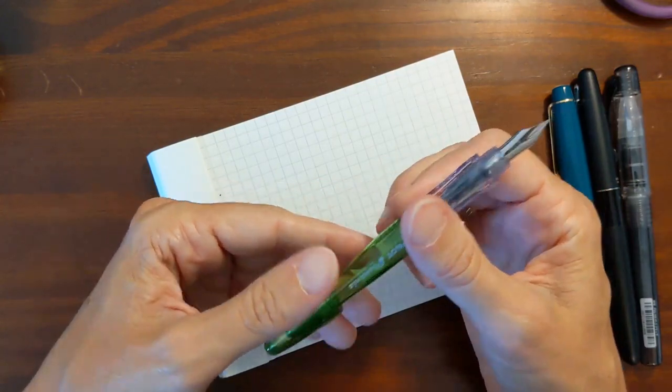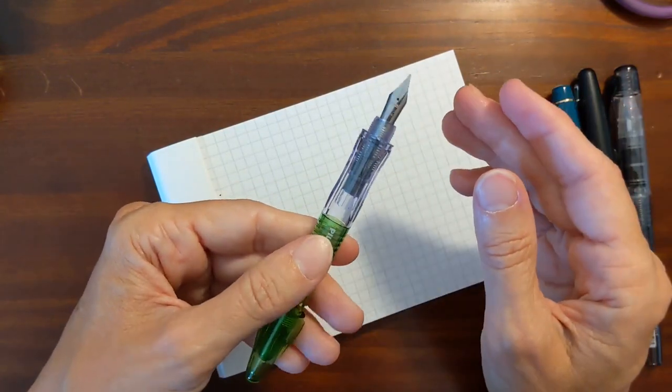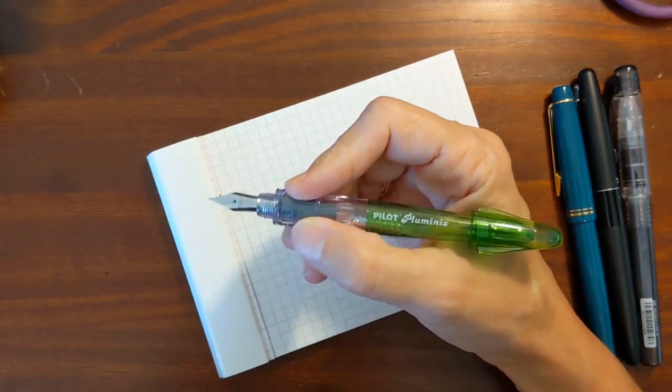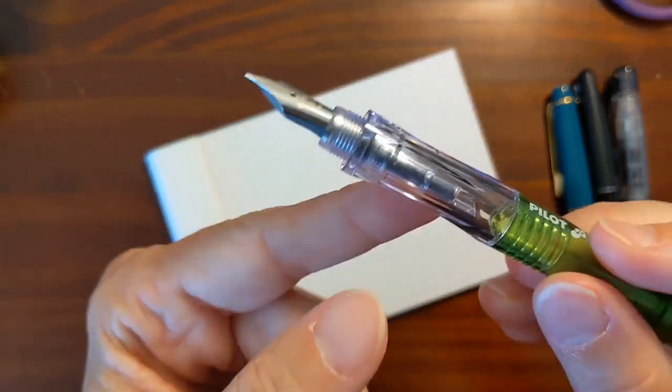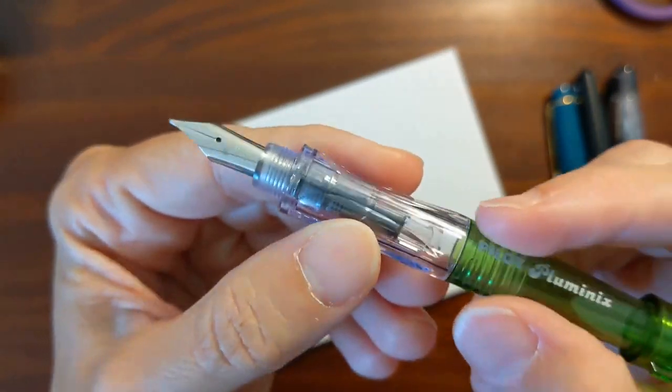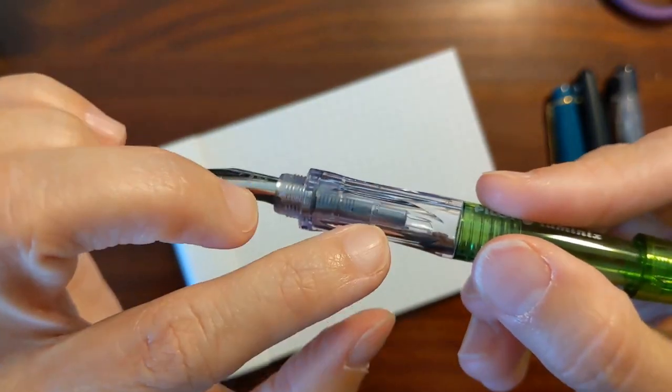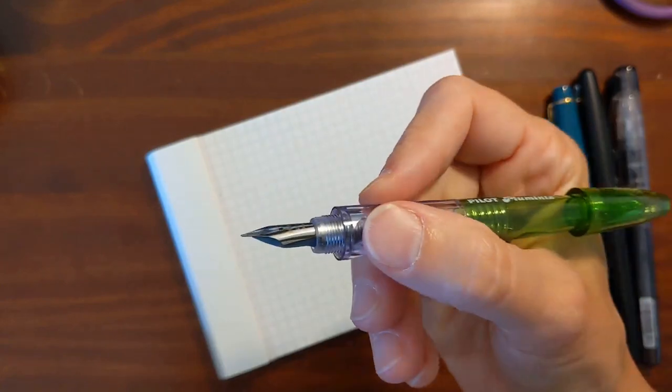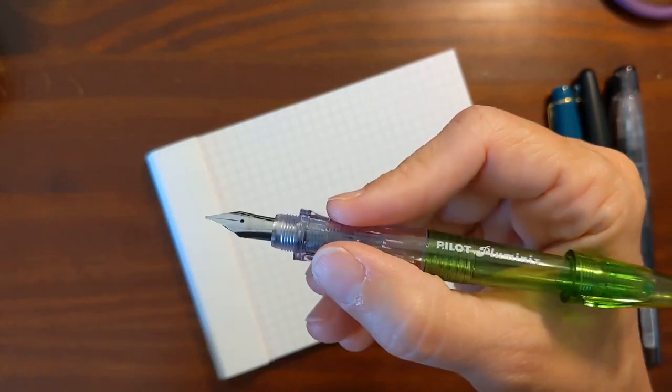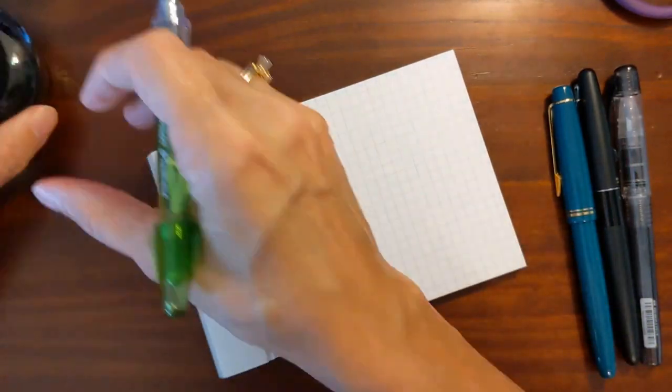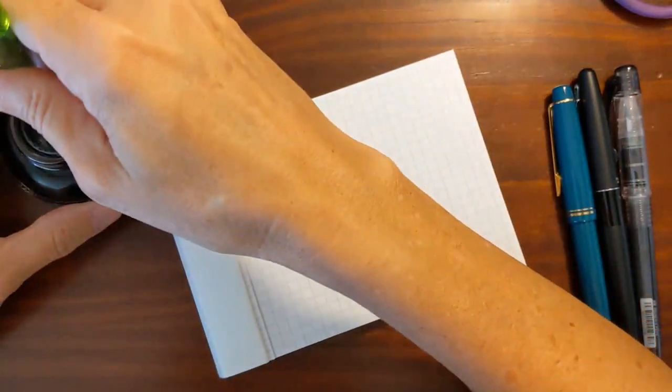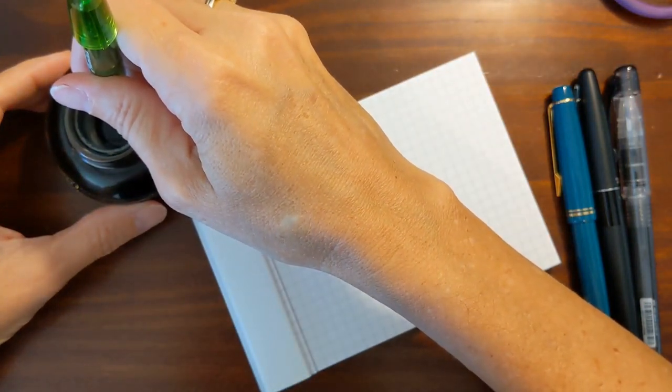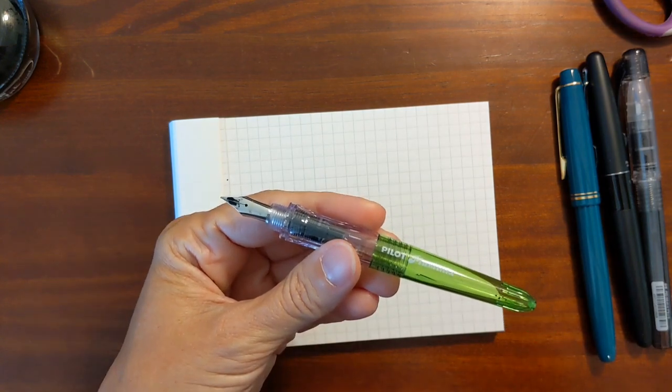For me not liking the Pluminix as much as I do, I think I kind of like it. It's rounded on the bottom but it's faceted right here, not triangular shaped but faceted, and I find that very comfortable. I know some people aren't fond of having a forced grip. I'm dipping this in some Sailor Gentle Black. I'm going to zoom in a little bit.